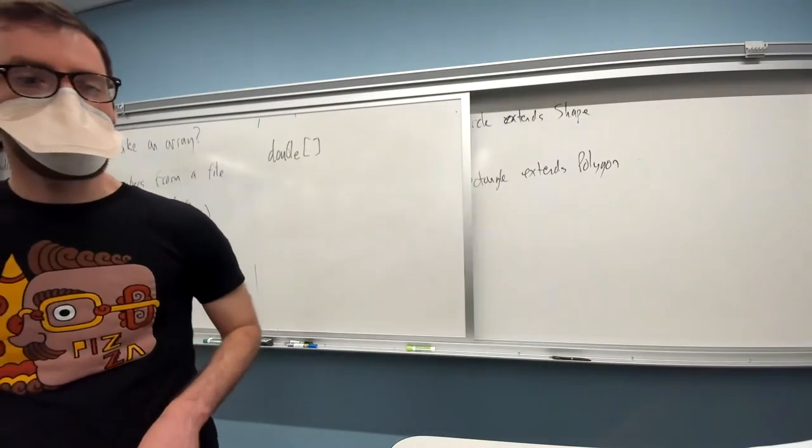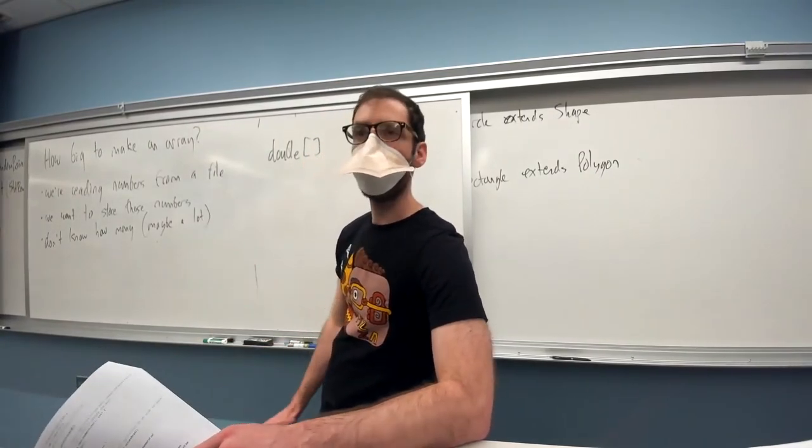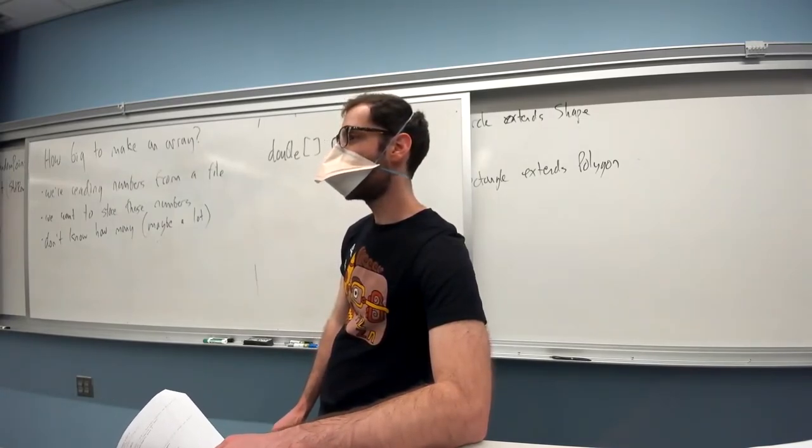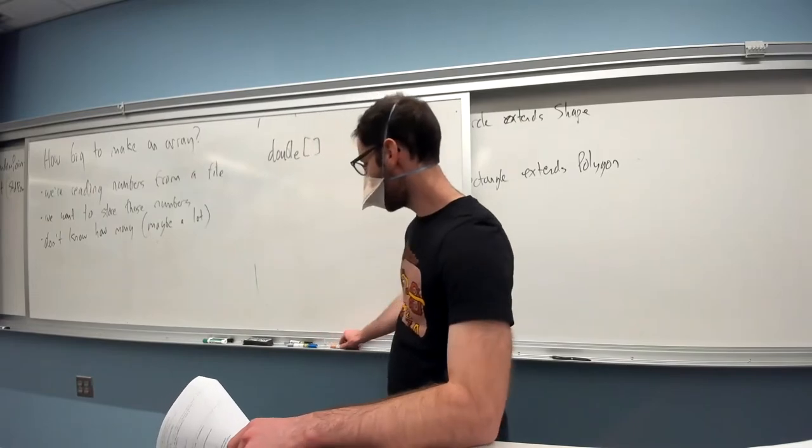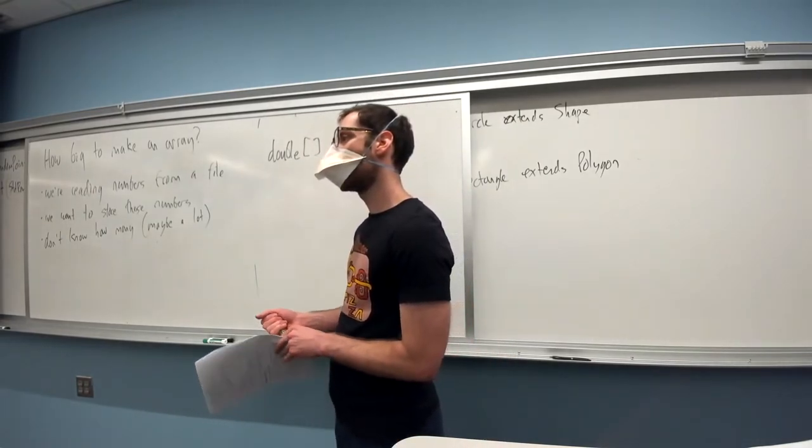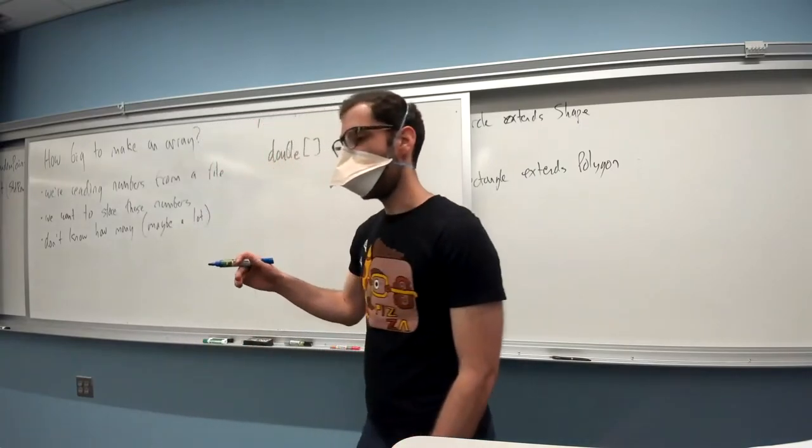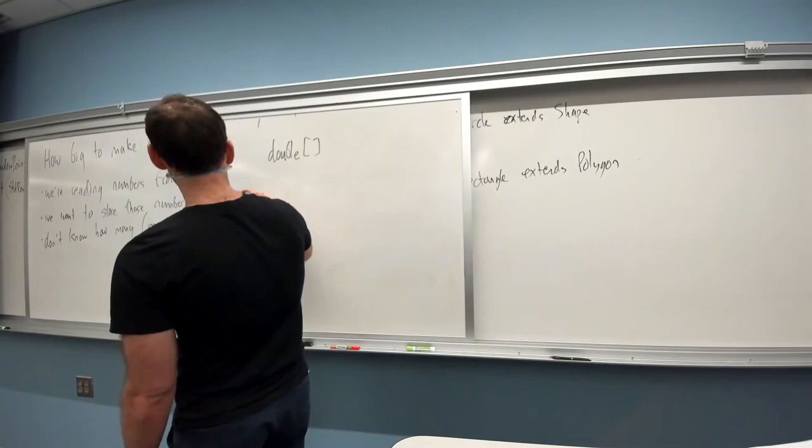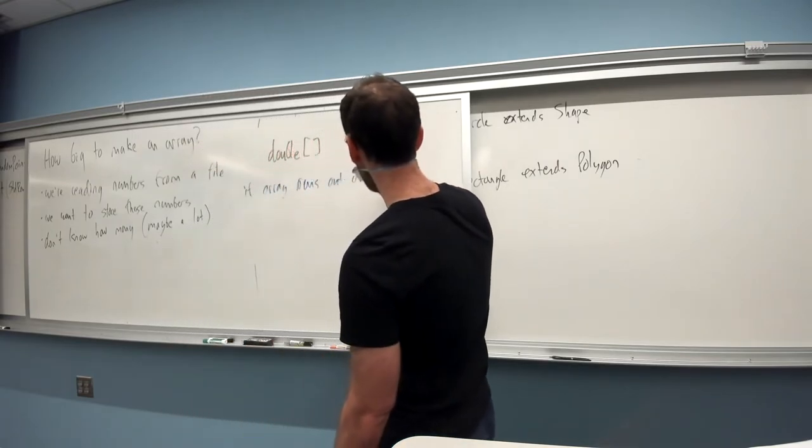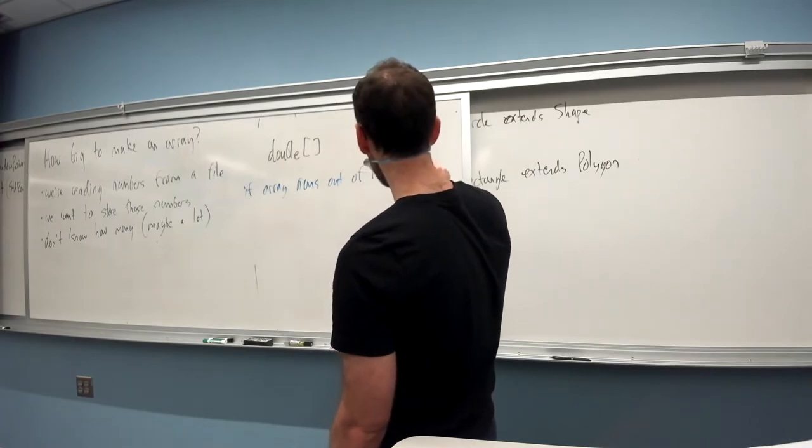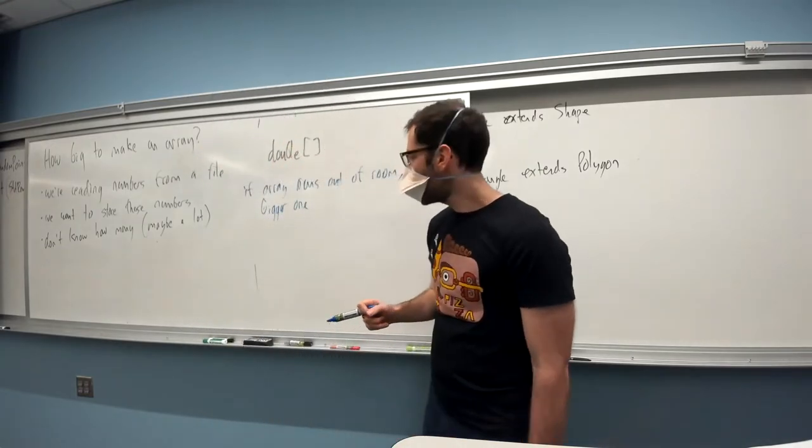So what I'd like for you to do is with your neighbors, try and brainstorm different ways that we might answer or approach the question of how big do we make the array that we're going to store this data in? All right. So someone share an idea that came up in your discussion or a question or problem that you were thinking about in your discussion. Is there a way to have it check for an error? Like if we tried to enter too many numbers into an array and have it just create a new array and dump those numbers there?